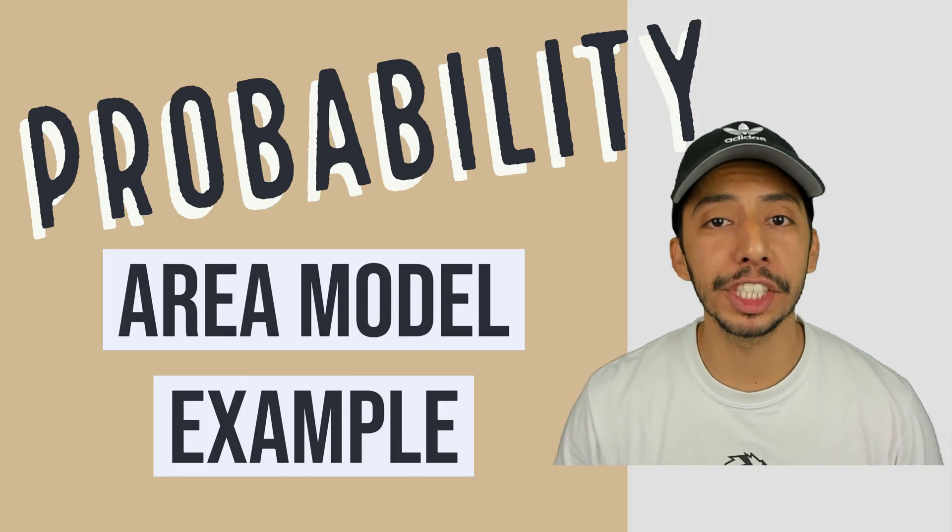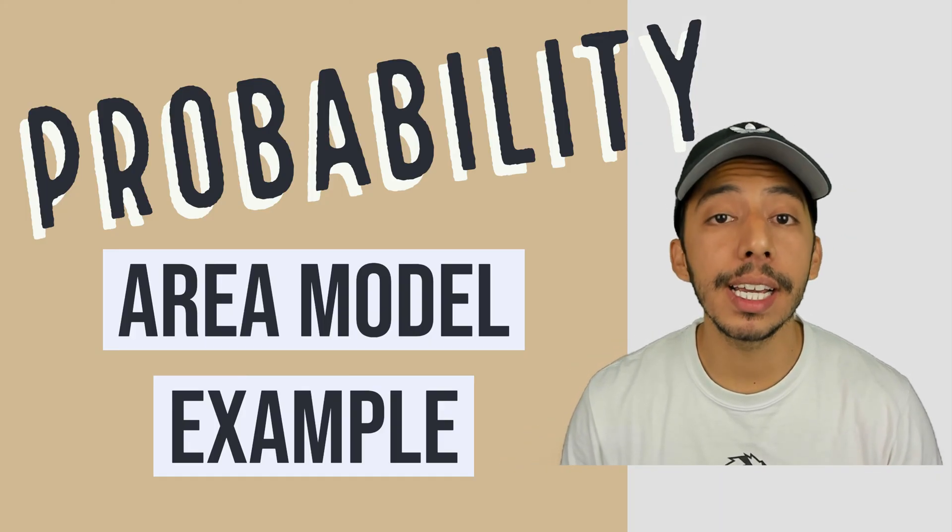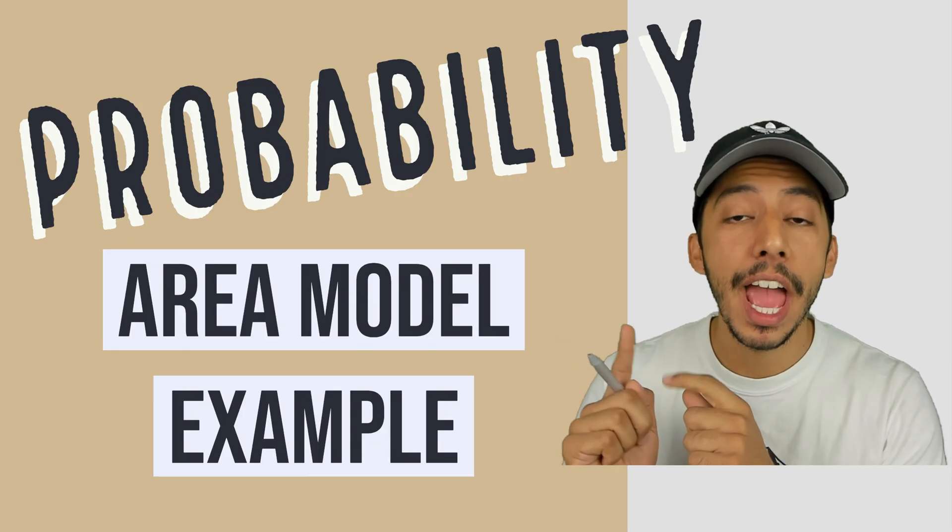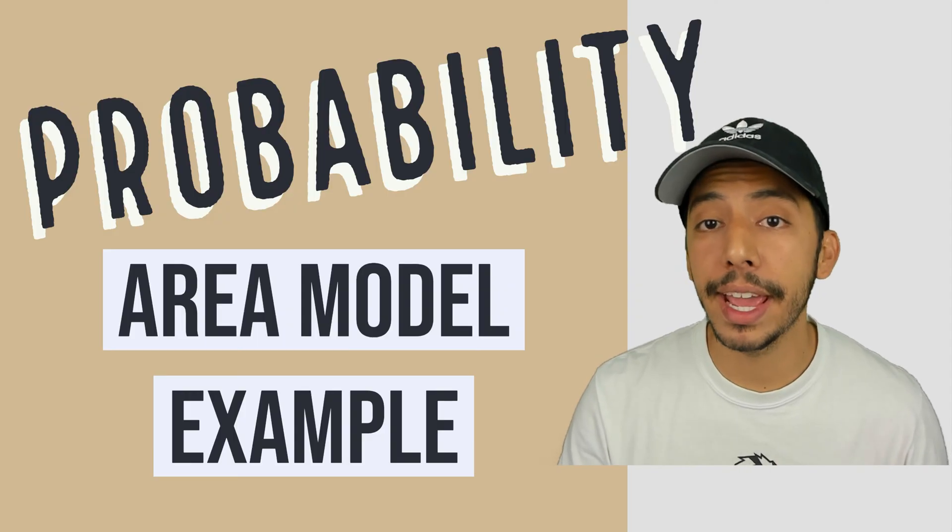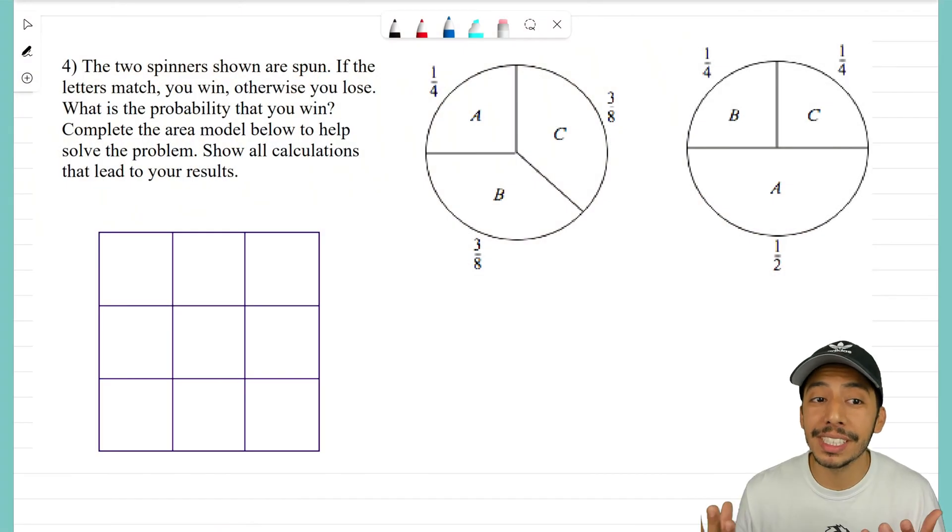Hey everyone, it's that math magician. On this video we're going to take another look at probability and see if we can set up an area model to help us answer a question. Let's go ahead and jump into this example problem where I have two spinners shown to the right that are spun. Now if the letters match when you spin them, you win, otherwise you lose.